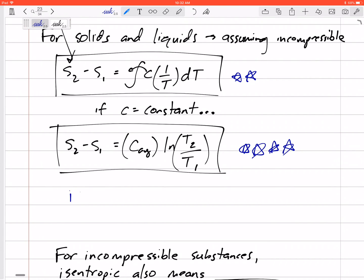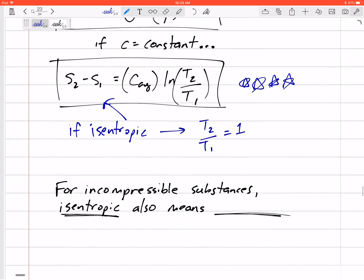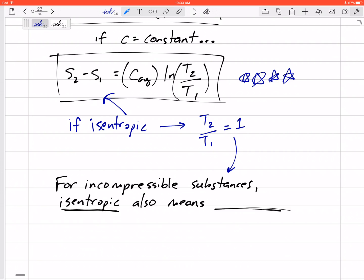Just look at this equation. If the process is isentropic, then what does that mean for this equation? If it's isentropic, this side of the equation is zero. And so, divide that C to the other side of the equation. When is LN zero? LN of one is zero. So if it's isentropic, T2 over T1 is equal to one. So for incompressible substances like solids and liquids, isentropic also means isothermal.